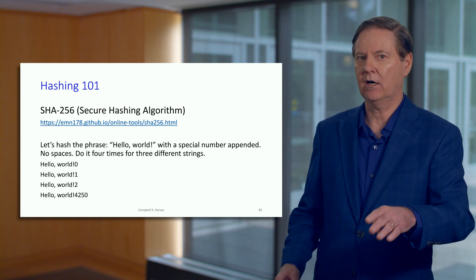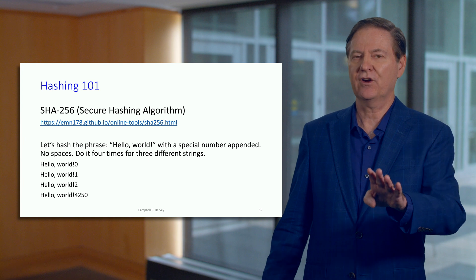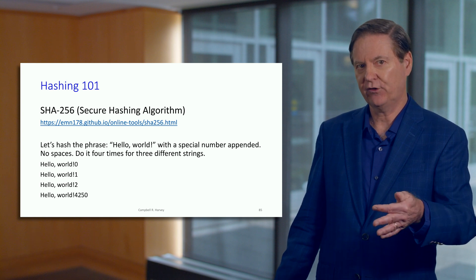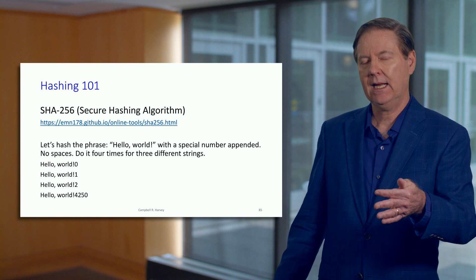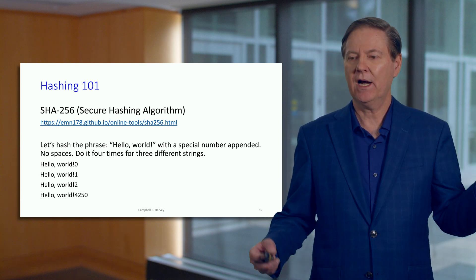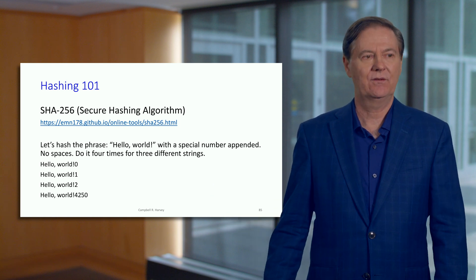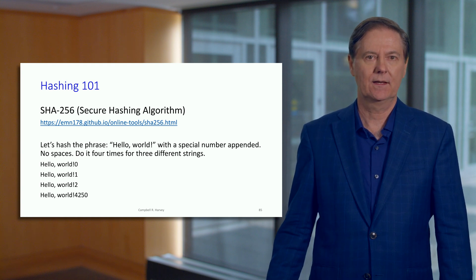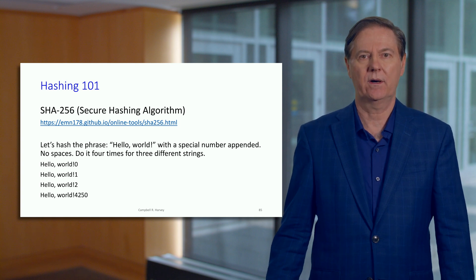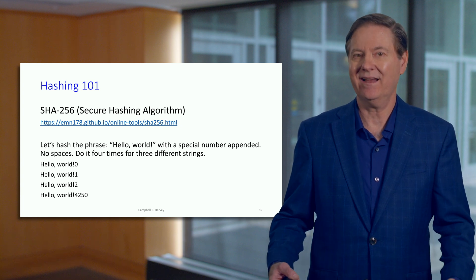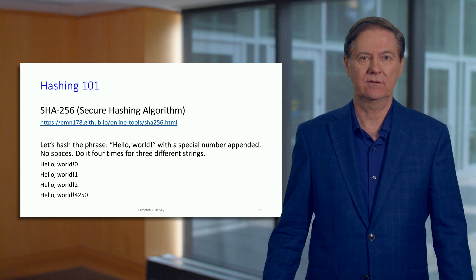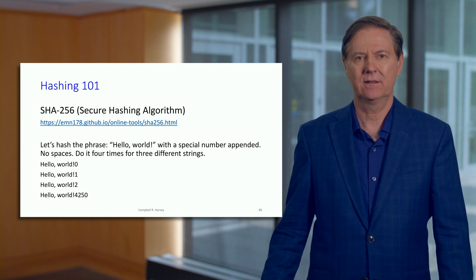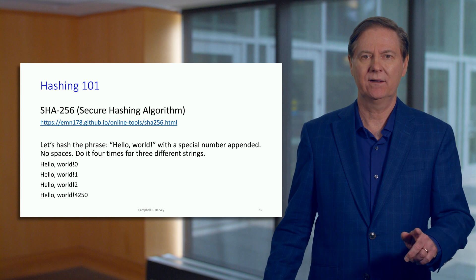The cryptographic hash is not encryption because there's no way to reverse it. Think about it intuitively: you've got a movie that's eight gigabytes. You feed it into a SHA-256 program and it delivers 64 characters. Does it make any sense that you could take those 64 characters and somehow unravel them into an eight-gigabyte movie? So this is a one-way function.